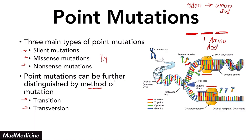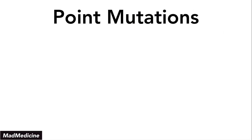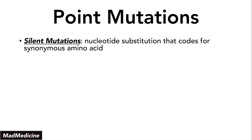Everything in this lecture is extremely high yield and you need to understand every single concept, but I will make it simple and brief. Silent mutations occur when you have a nucleotide substitution happening at a specific location in the codon. However, that substitution will not change the end amino acid. For example, if you had a codon with three nitrogenous bases making up the codon,